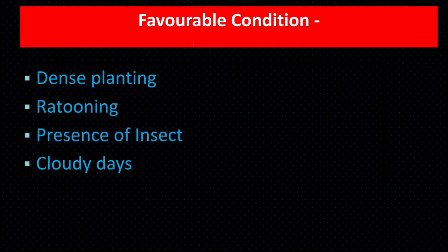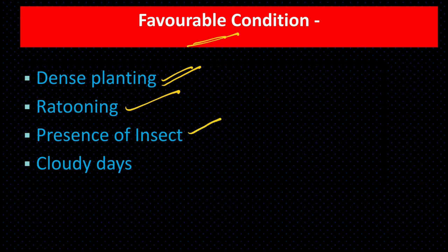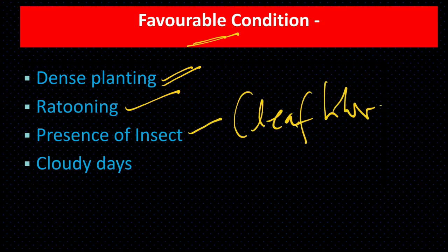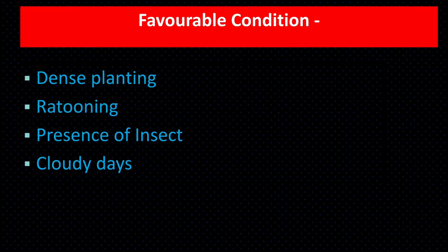Favorable conditions for grassy shoots: dense planting, ratooning, presence of insect vector leafhopper, and cloudy days.